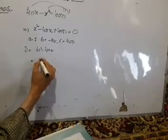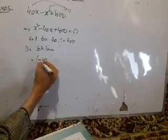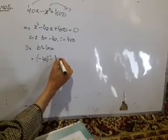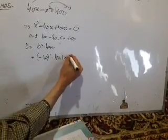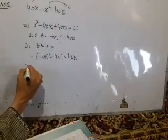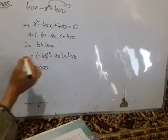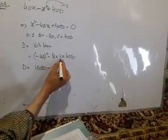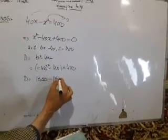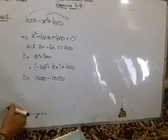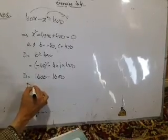To check if it is possible, we need to calculate discriminant D. If D is greater than or equal to zero, then it will be possible. D will be equal to b square, that is minus 40 square, minus 4 into A, A is 1, into C, C is 400. So D's value will be: 40 square is 1600, minus 4 into 1 into 400 is 1600. 1600 minus 1600, that is zero. So discriminant here is zero. When D equals zero, it is possible. Yes, it is possible to design such a park.